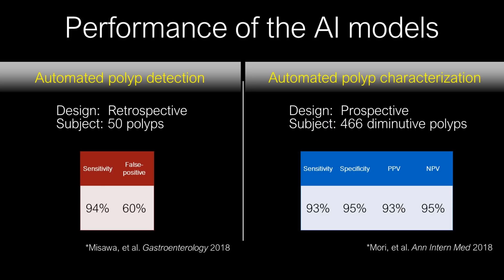Let us introduce the performance of the AI models. Regarding the automated polyp detection system, we retrospectively assessed the performance using 50 polyps. The studies show a sensitivity of 94% with a false positive rate of 60%.